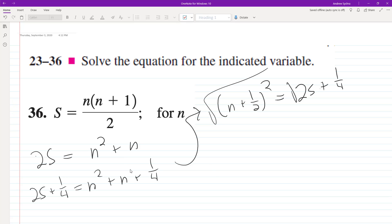Take the square root of both sides. We end up with n plus 1/2 equals plus or minus the square root of 2s plus 1/4.